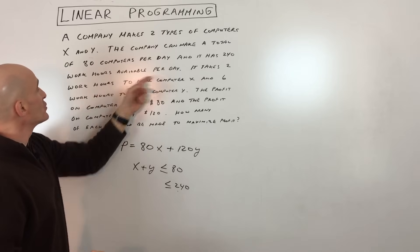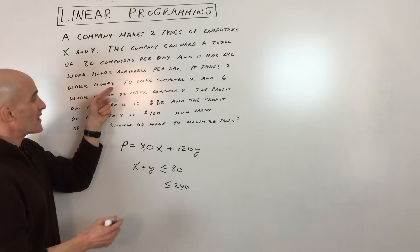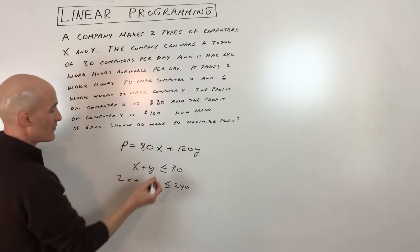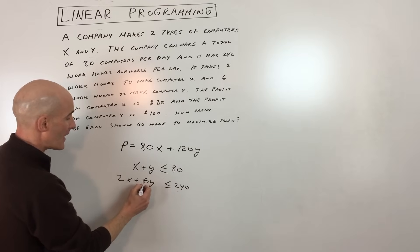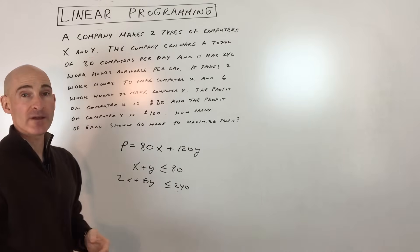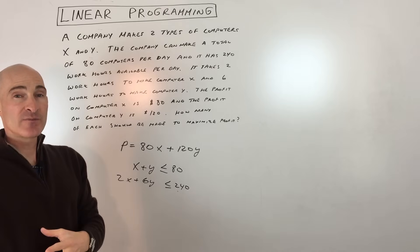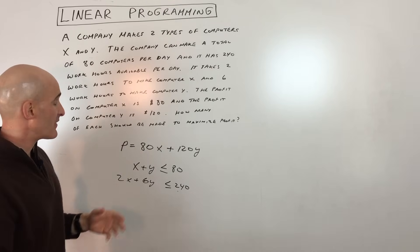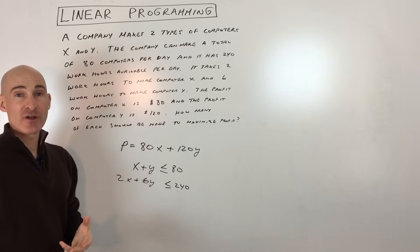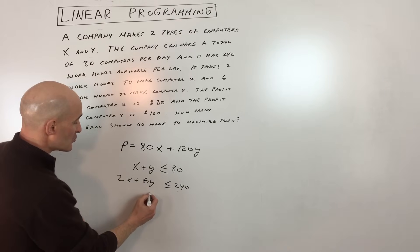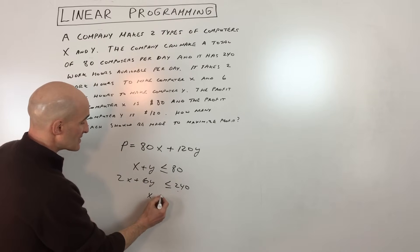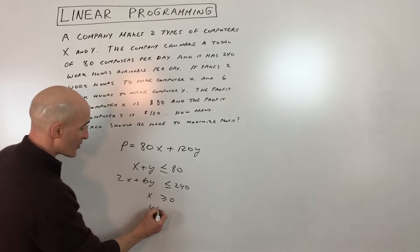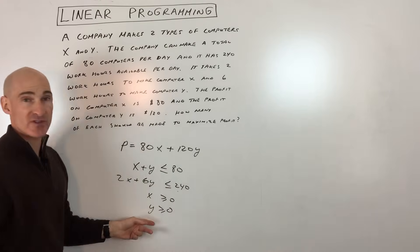It takes two work hours to make computer X, so that's 2X, and six work hours to make computer Y, so that's 6Y — giving us 2X plus 6Y is less than or equal to 240. Something not always written in the problem is that you can't make a negative number of computers, so X is greater than or equal to zero, and Y is greater than or equal to zero.